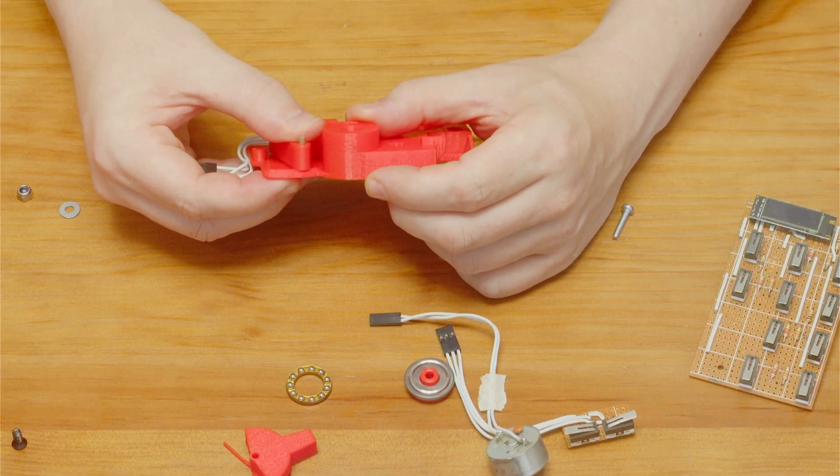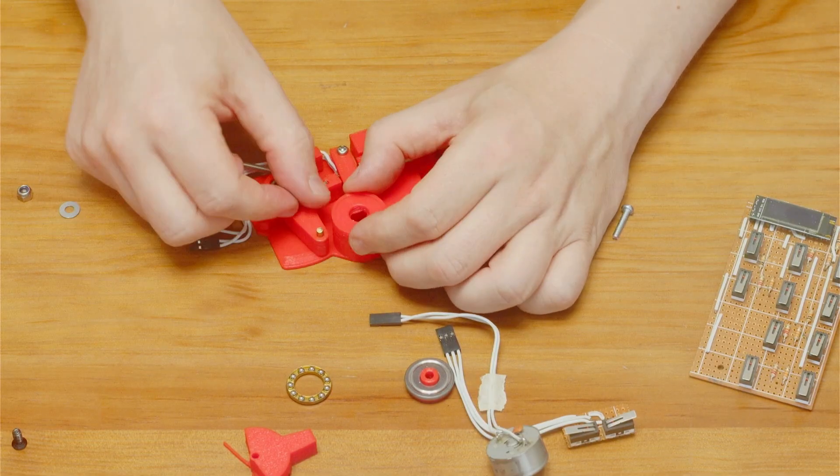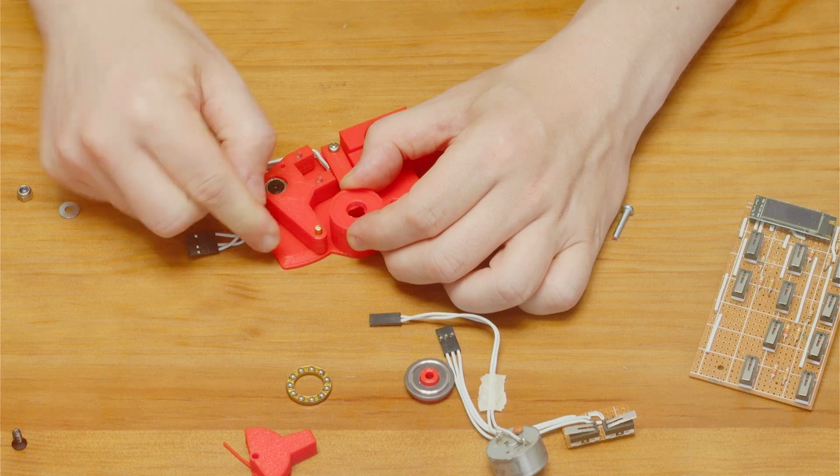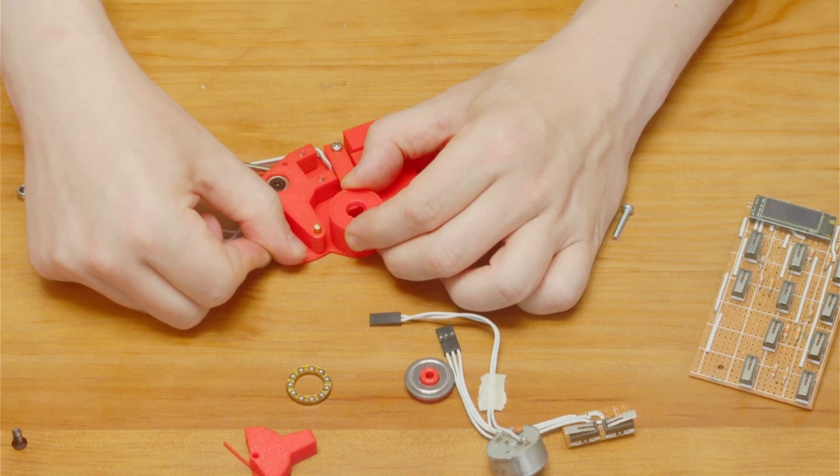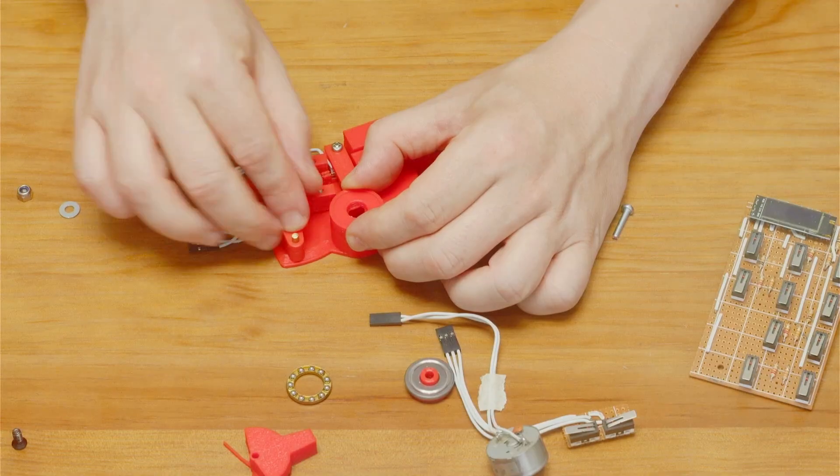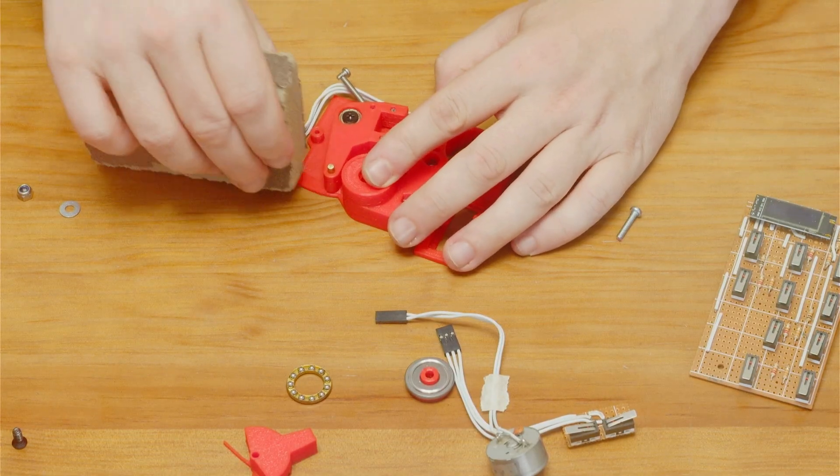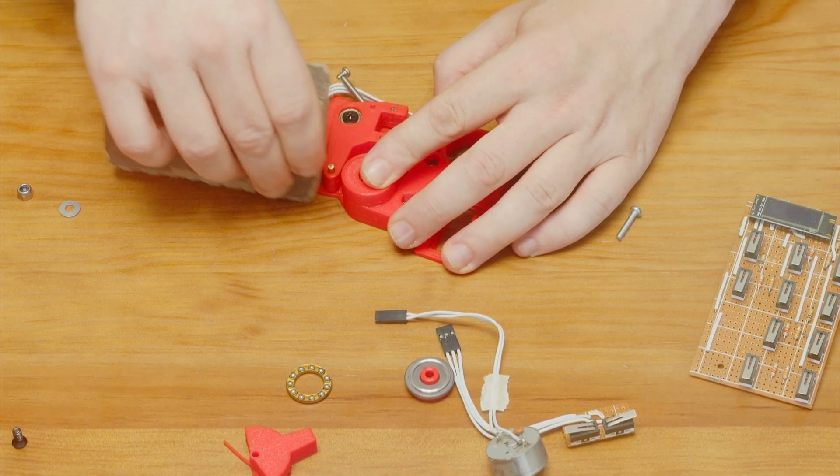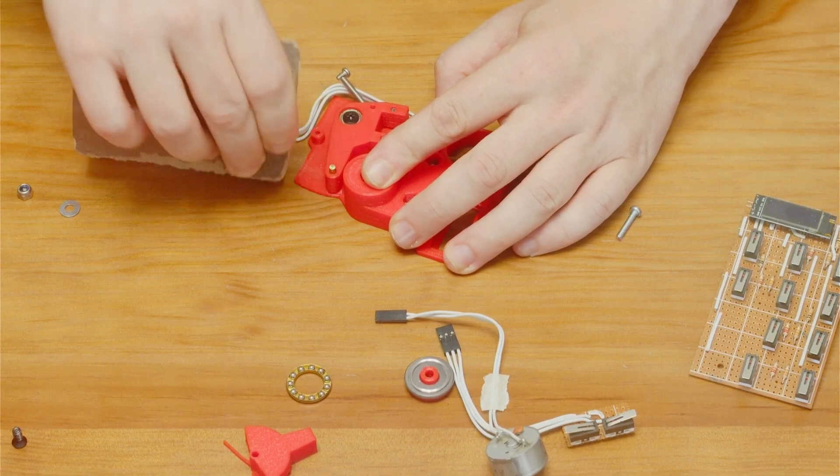The swing arm should ride on top of the track without getting stuck but the printer might leave some roughness on the surface. I sand it a bit just to clean any imperfections and ensure the movement is continuously smooth.